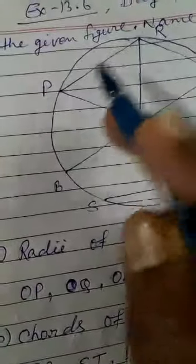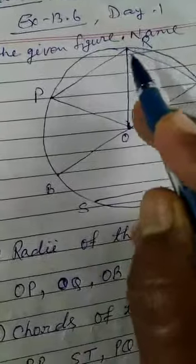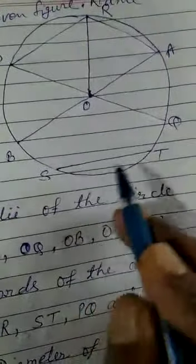Like here PR - point P also lies on the circle and R also. So PR is called a chord of the circle. Here you see ST, so S and T both points lie on the circle.